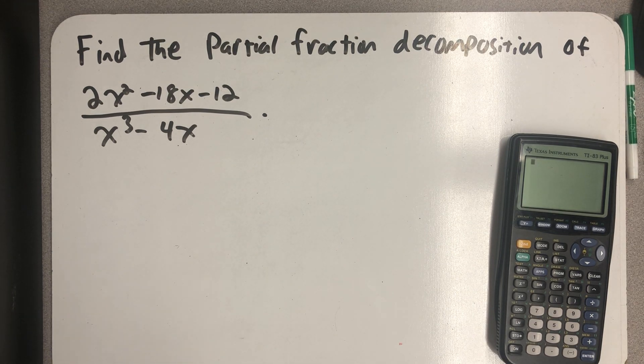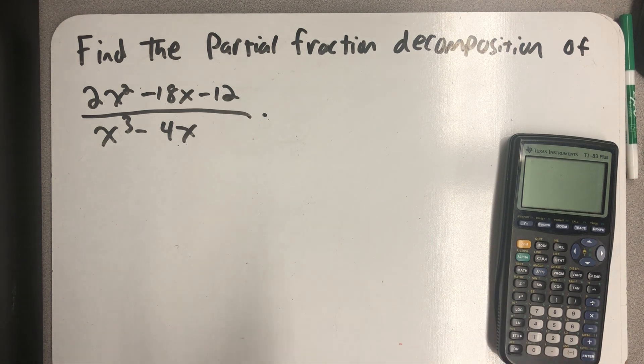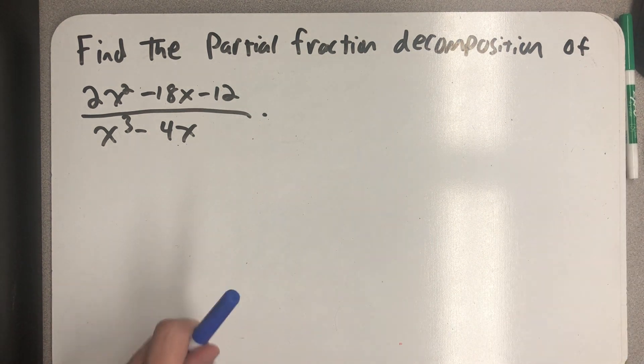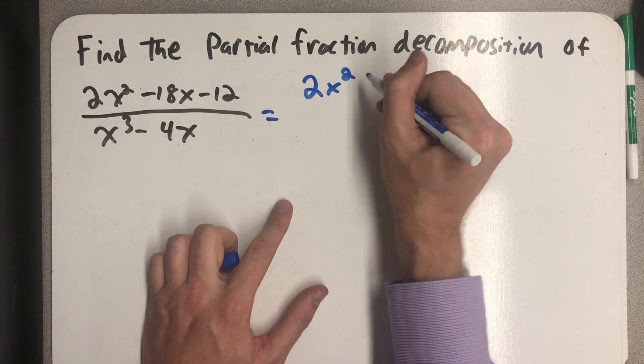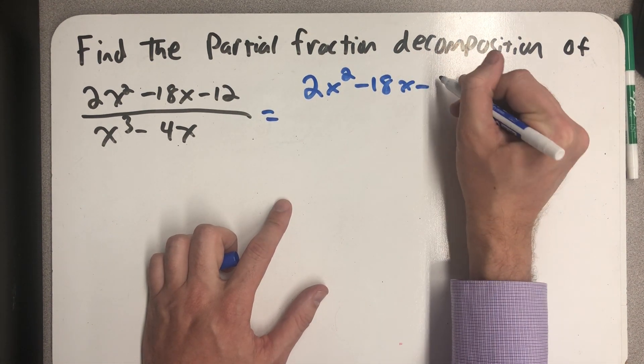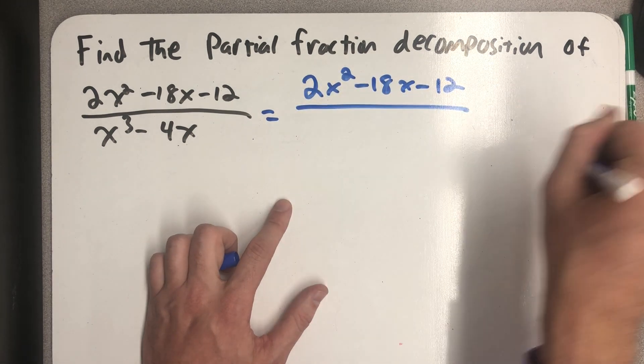I'm asked to find the partial fraction decomposition of 2x squared minus 18x minus 12 all over x cubed minus 4x. Well the first thing I'm going to do is factor the bottom because that's going to tell me what kind of fractions I need in my decomposition.